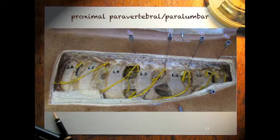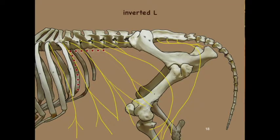The inverted L block is probably the simplest and most commonly used technique. Using routine-sized needles, you infuse anesthesia in an L-shaped pattern. Disadvantages include the large volume of anesthesia required, the length of time to infiltrate such a long line, and incomplete block of the deep layers of the abdominal wall, particularly the peritoneum.